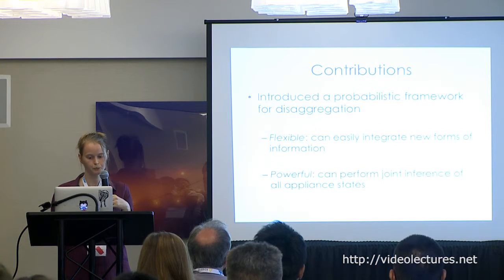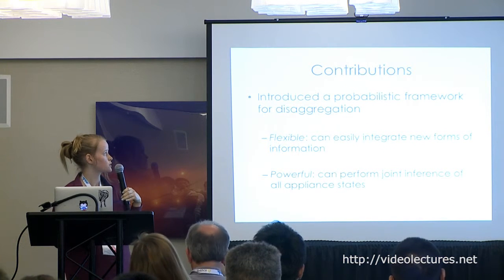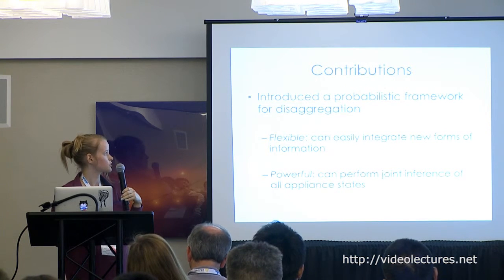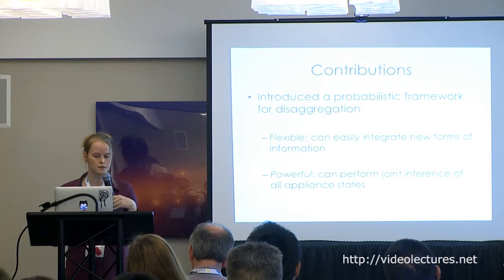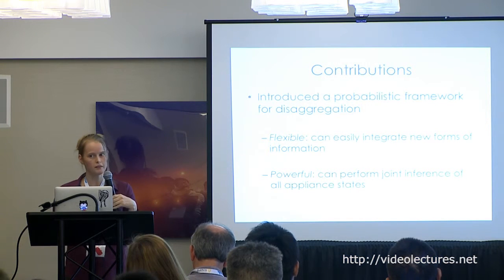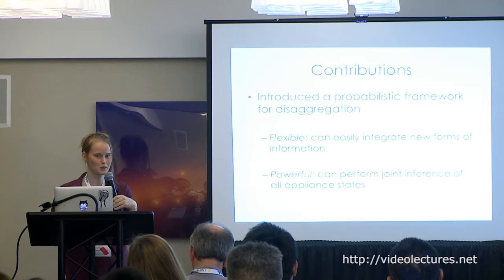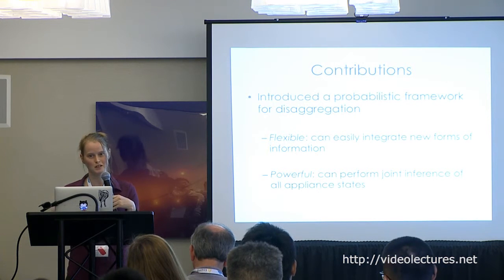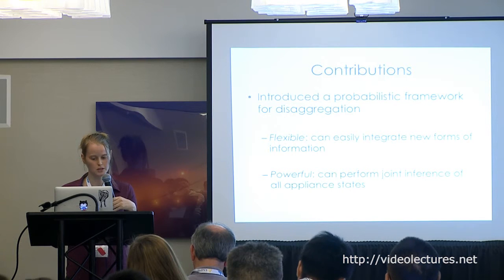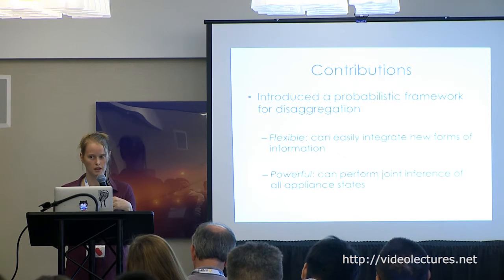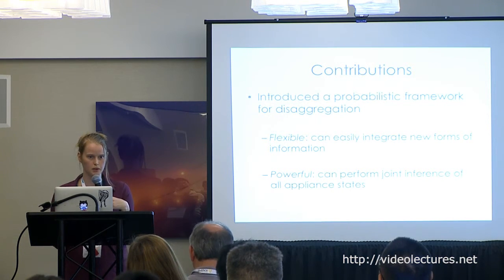Our contributions include introducing a probabilistic framework for disaggregation that is flexible, powerful, and scalable. Next steps include understanding when and how contextual information helps, using more data, more houses, and more information to improve F-measure results. We welcome any additional suggestions.